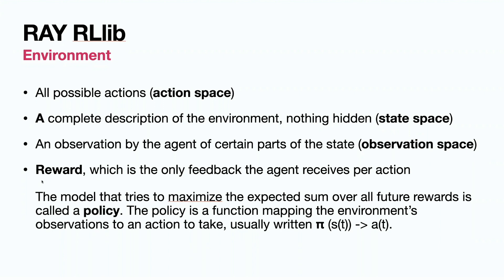A reward is usually either implemented as a set of rules by the developer or is fitted by another neural network. Such a group of algorithms is called actor-critic, where the actor does actions and the critic evaluates the actions, approximating their rewards. So there are two neural networks: the actor approximates optimal policy, and the critic approximates optimal reward.